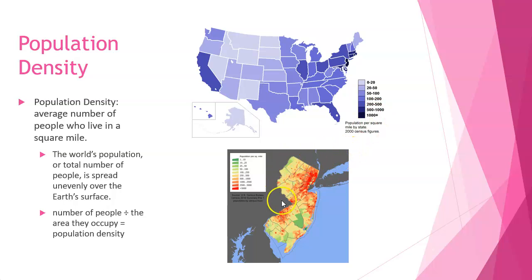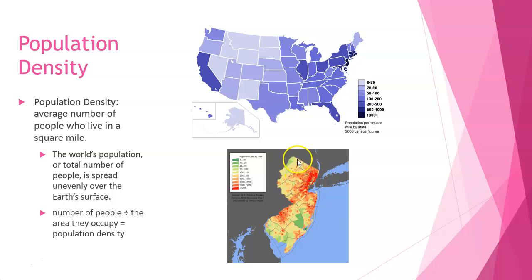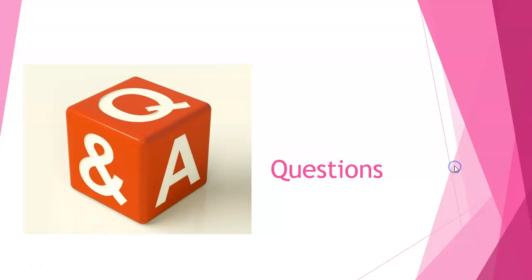If I look just at New Jersey now, I see that it's not exactly a thousand people every square mile, because if you look at this map you see heavier populations closer to the coast, whereas the western part of New Jersey is much less densely populated. And that is all we have for population.